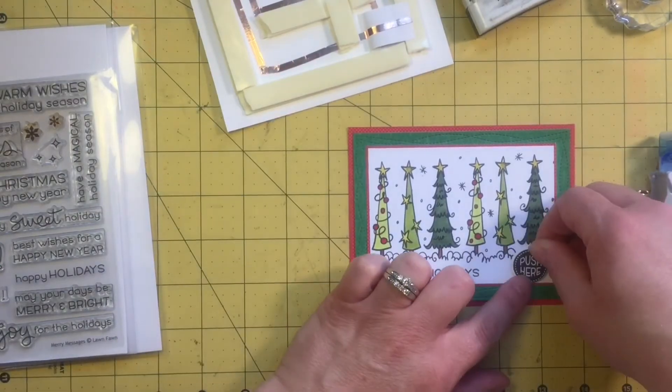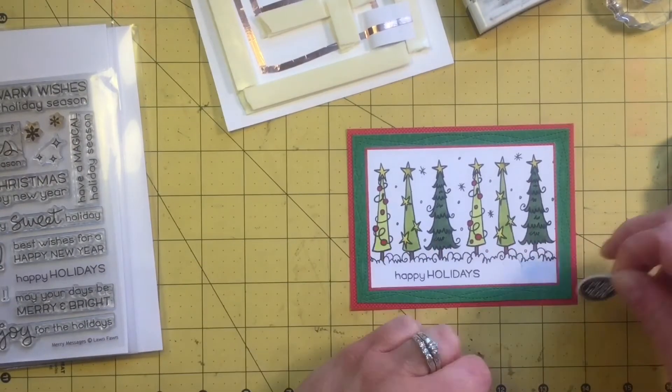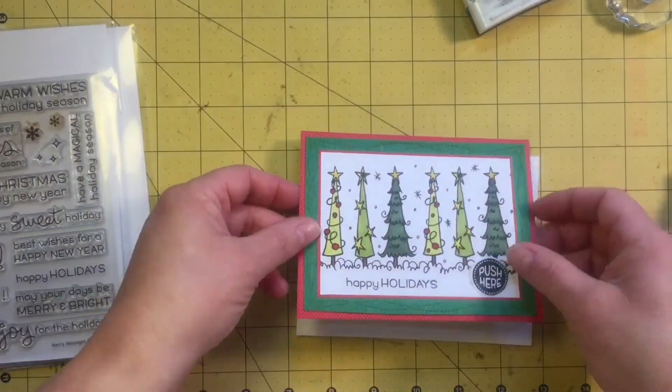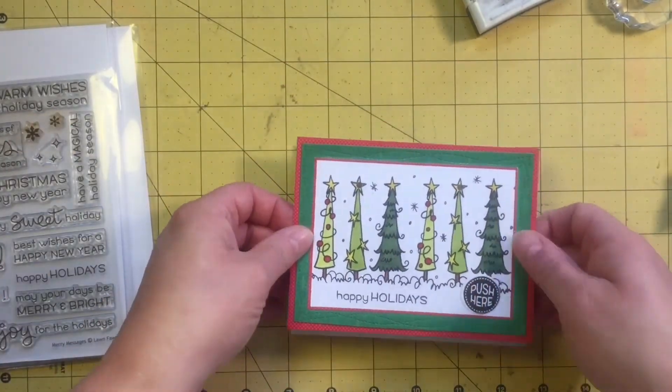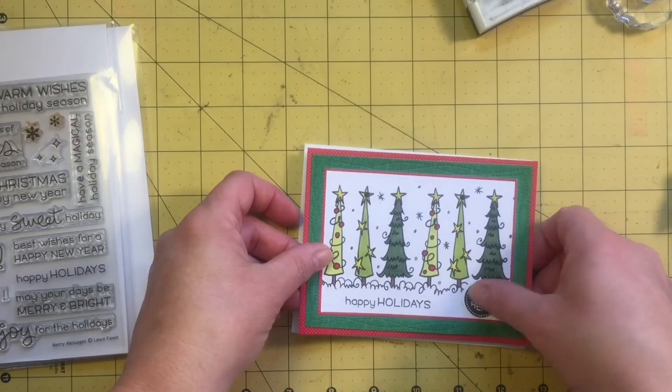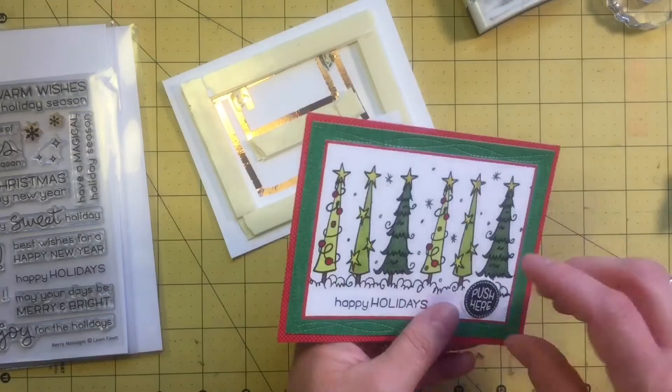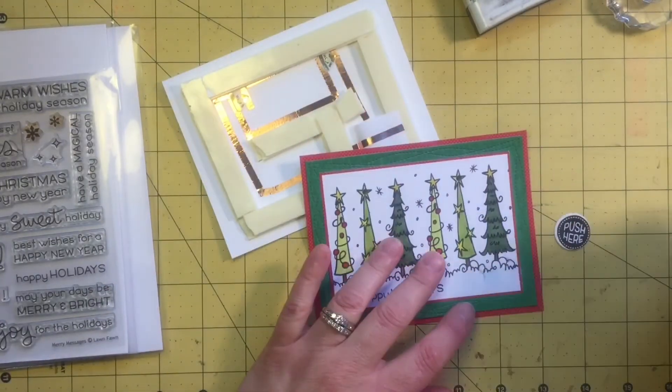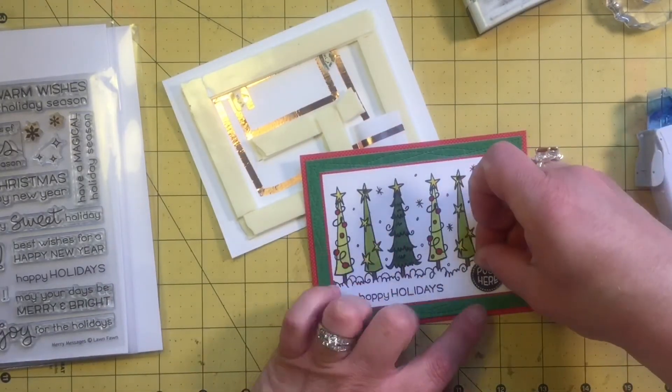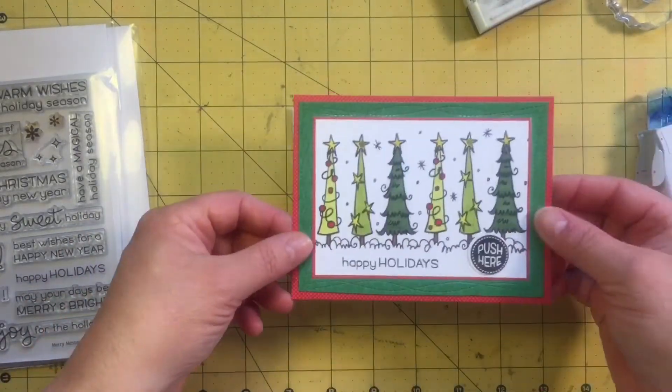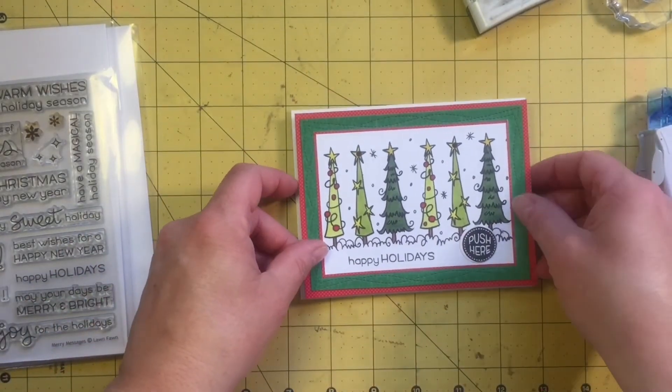I'm going to go ahead and attach that where I think it needs to be. I'm not going to push it down really hard because I need to determine, okay I think I have it over a little bit too far right. I think it needs to be a little left, so I'm going to pick it up and move it over a little bit. And then I'm going to adhere my panel onto my base.